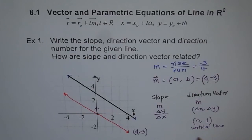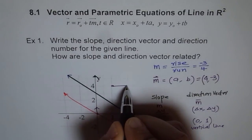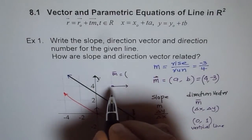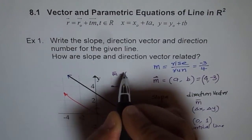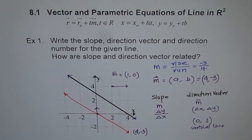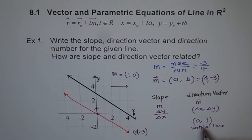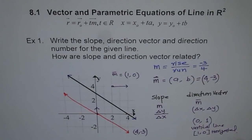A horizontal line would have direction vector (1, 0) — x moves 1 unit and y does not move. Also note: some books write direction vectors in square brackets instead of parentheses, but both mean the same thing. Whether you write square brackets or parentheses, it doesn't make a difference.